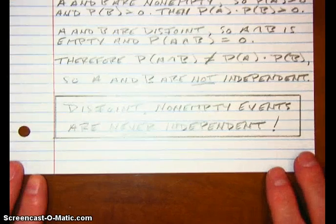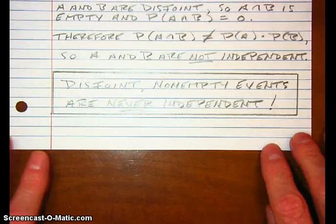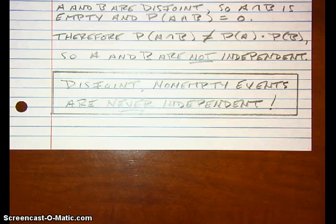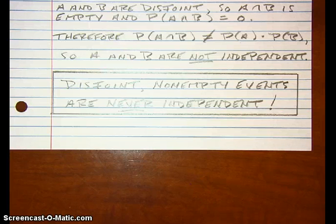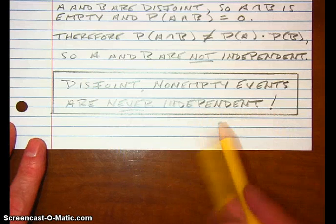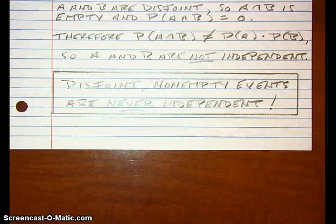This is one of the things that causes the most problems with probability. People get confused about independence and disjoint. Independent means the probability of one is not affected by the occurrence of the other. Disjoint means the two events have no outcomes in common. If one disjoint event happens, the other can't happen — so its probability drops to 0, meaning the occurrence of one changed the probability of the other. By definition, those events are not independent. Always remember: disjoint and non-empty events are never independent.